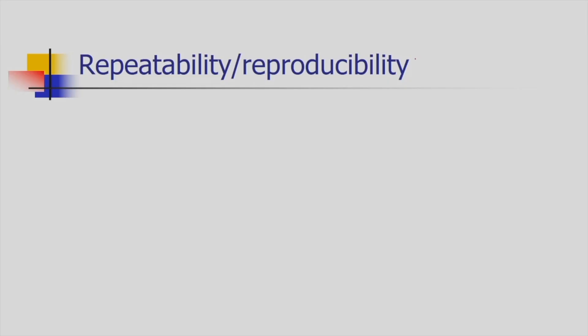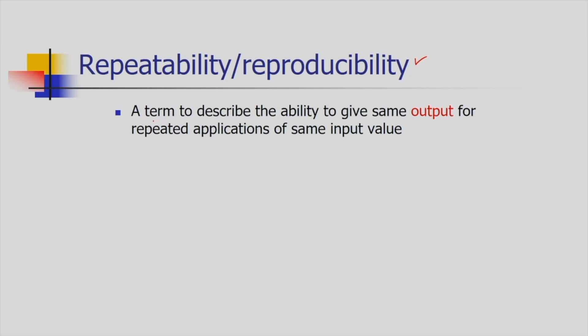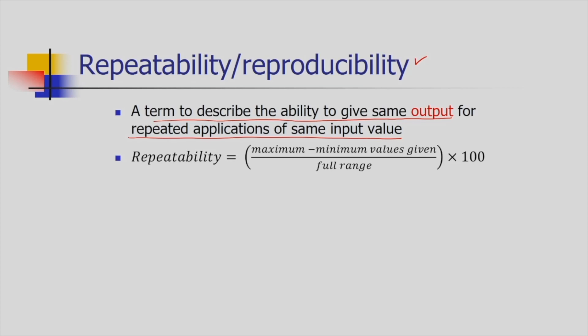The next performance-related term is repeatability or reproducibility. It is defined as the ability to give the same output for repeated applications of the same input value. We use sensors multiple times and it is expected the sensor gives the same answer for the same input, but that may not happen. Repeatability is computed as the difference between the maximum and minimum values given by the sensor divided by its full range, expressed as a percentage.